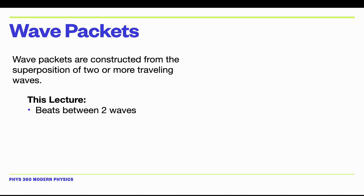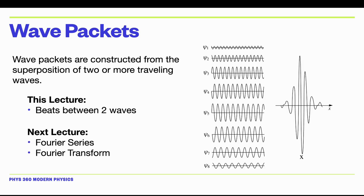Wave packets can be thought of as being constructed from a superposition of two or more traveling waves. In this lecture, we will look at the phenomenon of beats, which is what happens when you add two traveling waves together. In the next lecture, we'll look at Fourier series — when you add many traveling waves, you can get more complex wave packets.